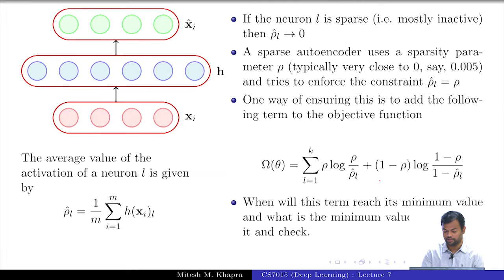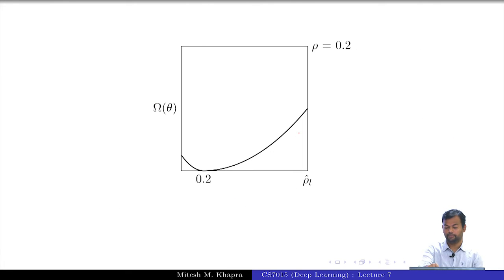My rho that I have taken is 0.2 and if I plot that function for different values of rho hat L, it will reach the value 0 only when rho hat L is equal to rho. So you can go back and plot this and check and it is actually clear from the equations itself that it will be minimized only when rho hat is equal to rho L. Everyone gets this? So that means this is a genuine, this is a reasonable thing to do.